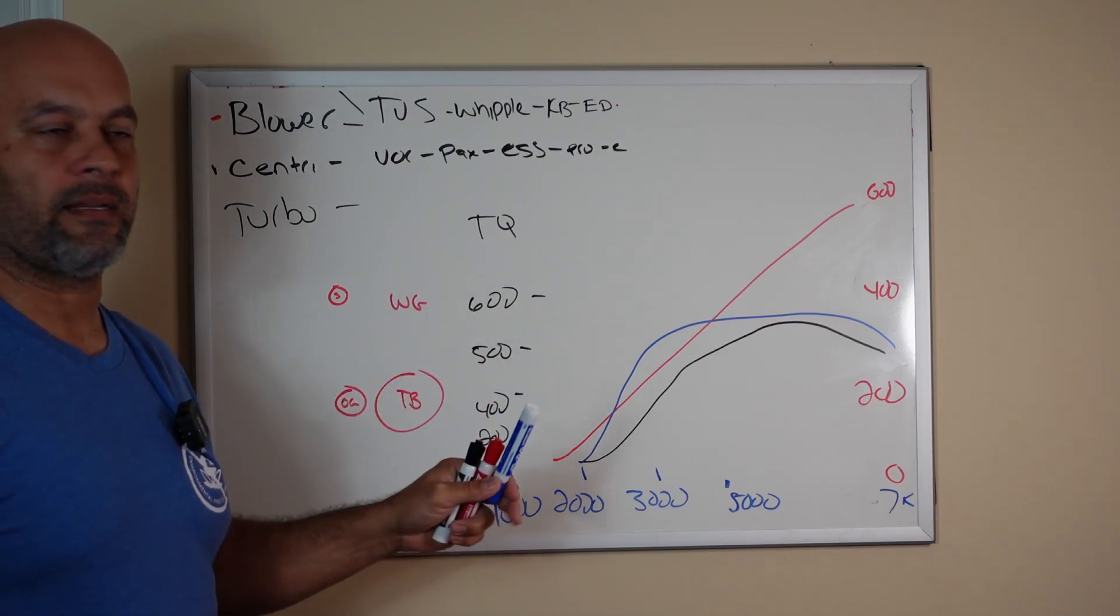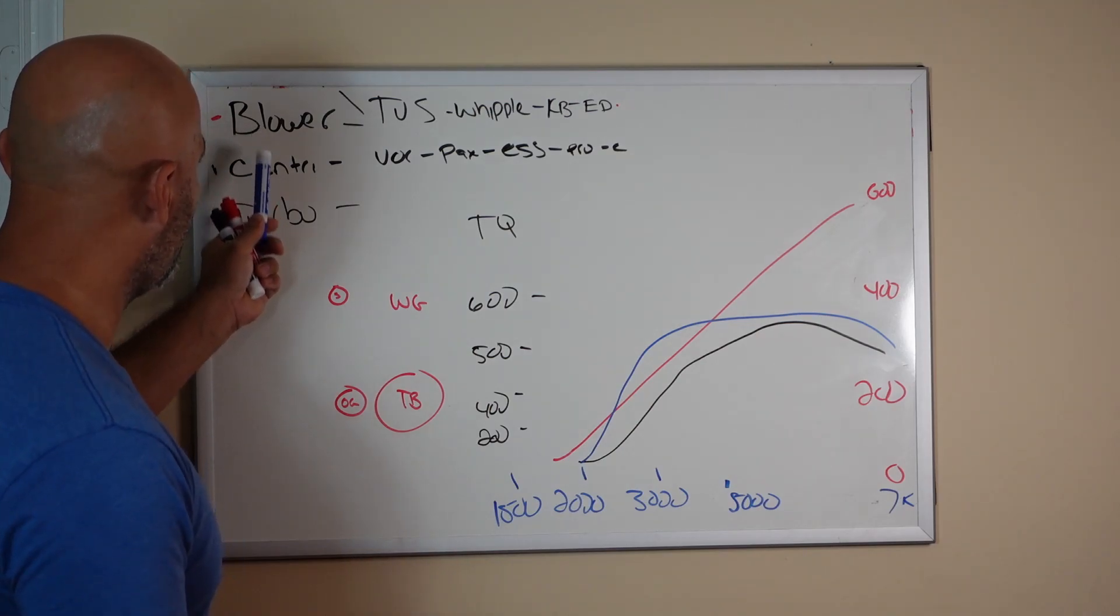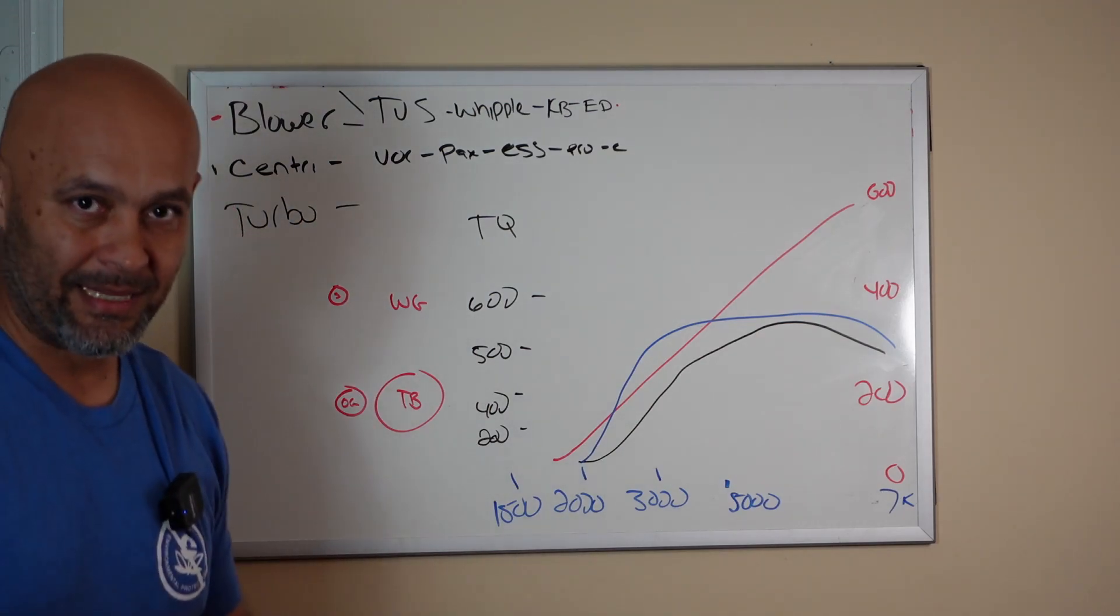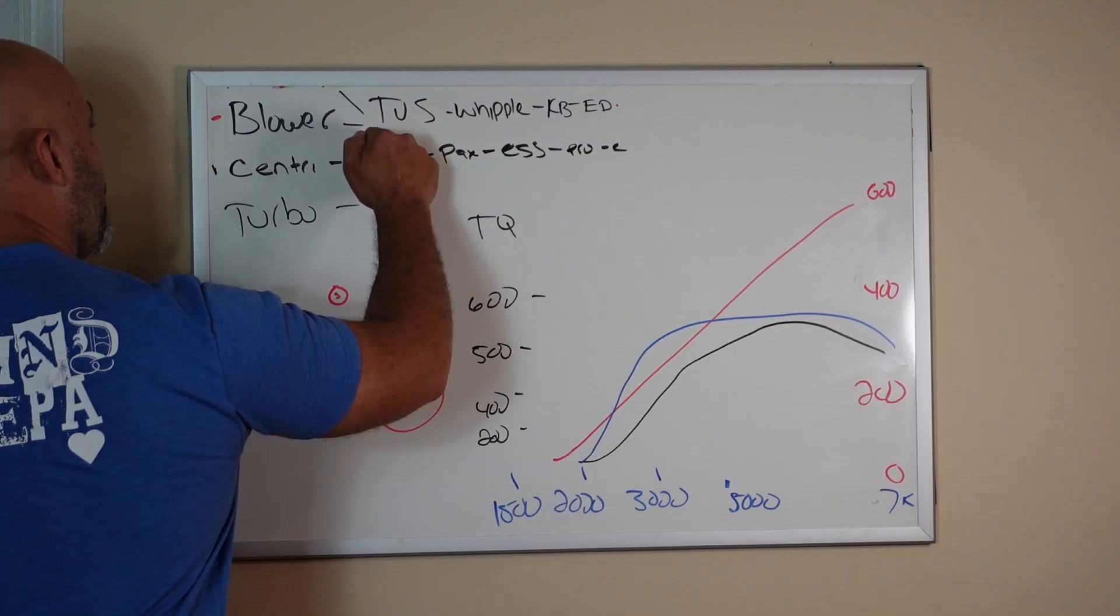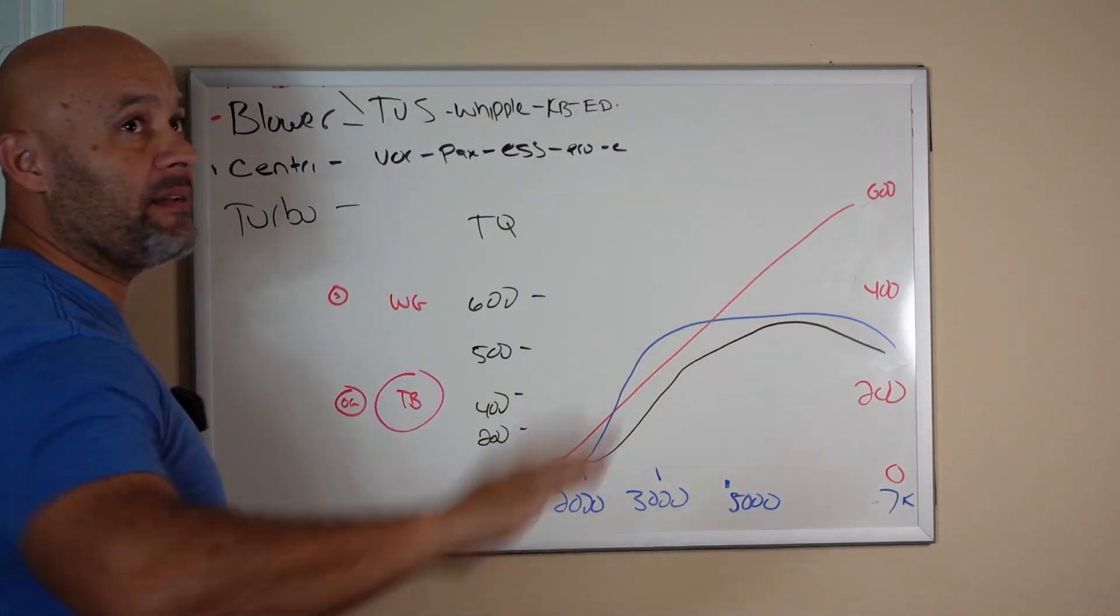But I'm giving you a very generic way of choosing how you want your power to be delivered. Instant power blower, like a TVS, a VMP, a Whipple, period, end of sentence.